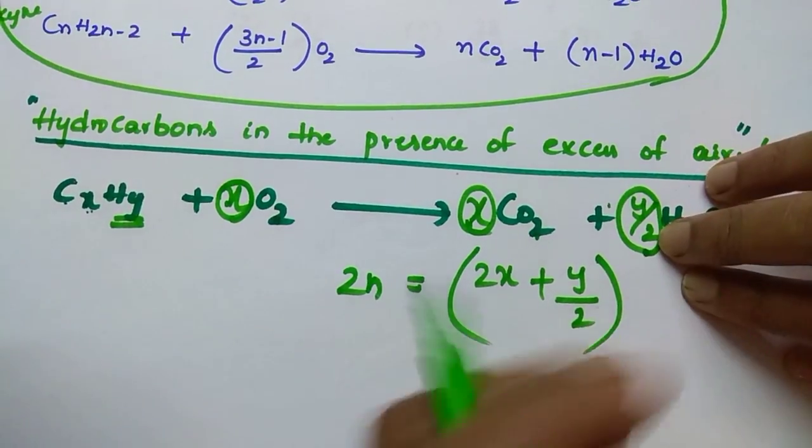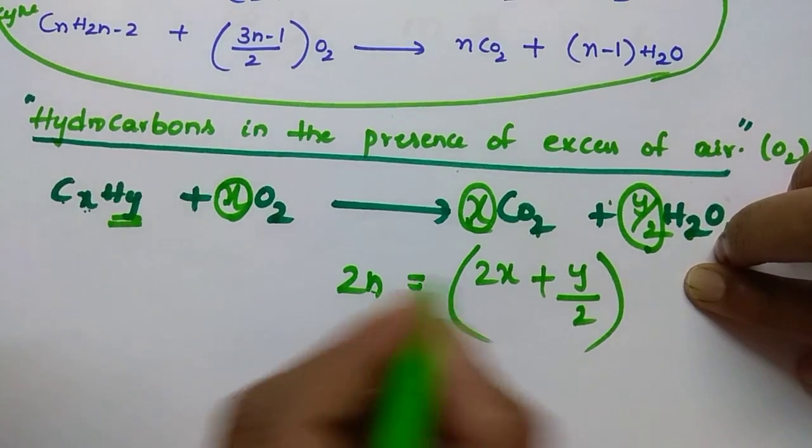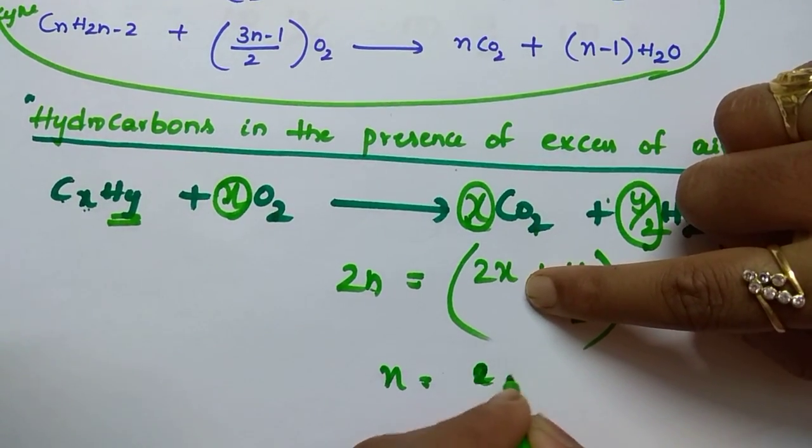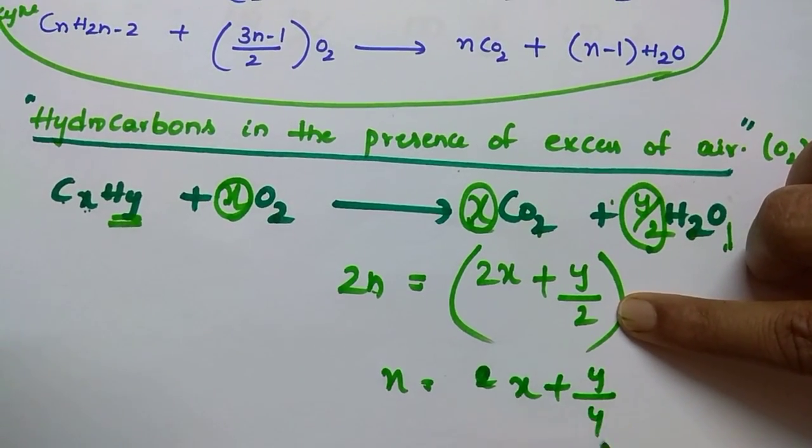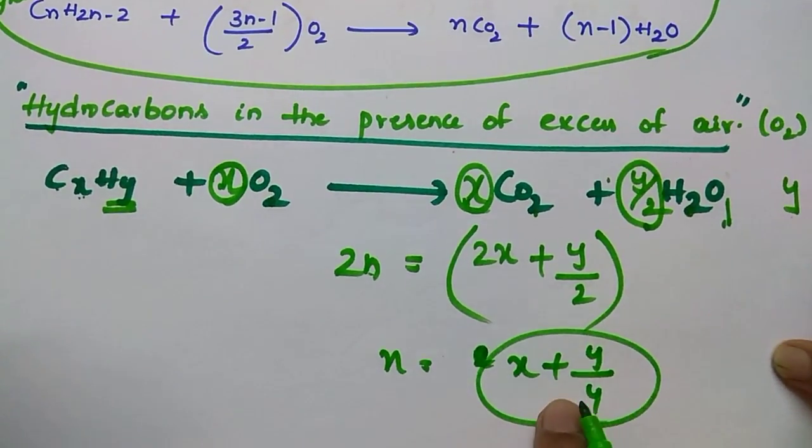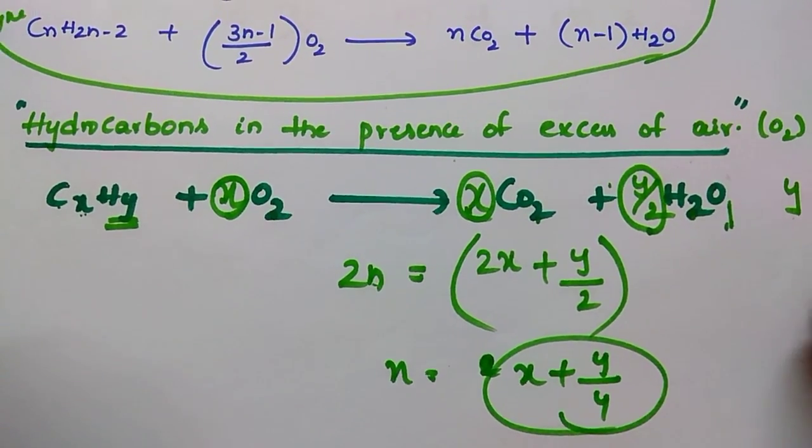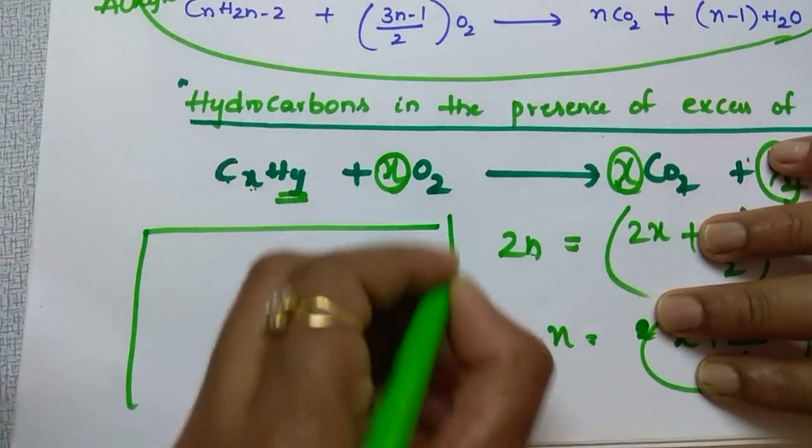Then n is equal to, move this toward this side: 2x by 2 then it will be x, y by 2 and 2 is there, y by 4. So number of oxygens: x plus y by 4.